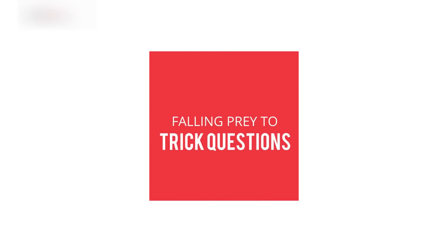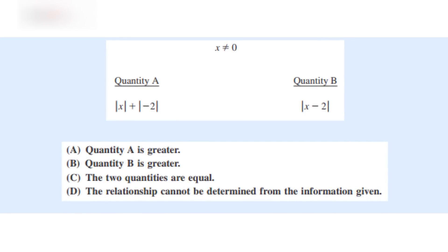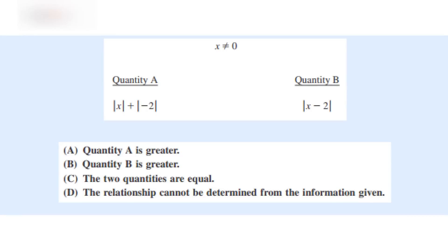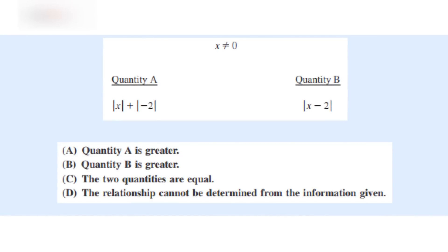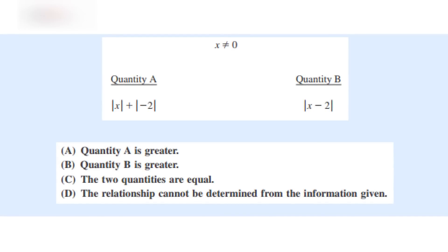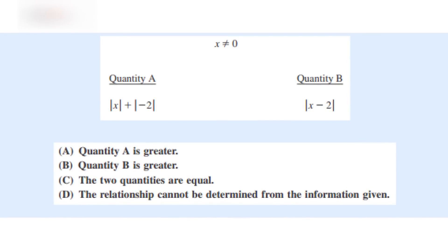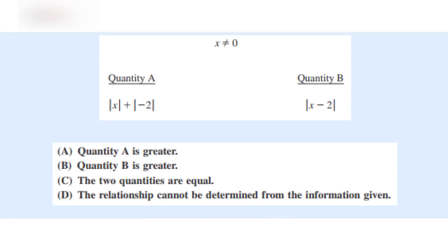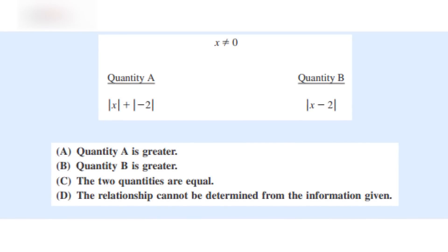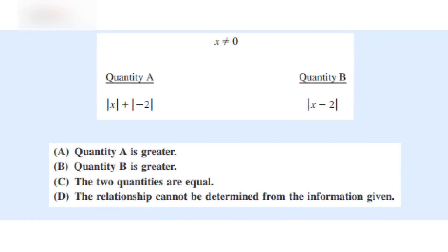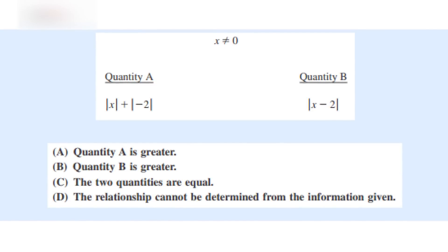Number two: falling prey to trick questions. Let me show you what I mean. Given that x is not equal to zero — quantity A: mod of x plus mod of minus 2; quantity B: mod of x minus 2. The choices are: quantity A is greater, quantity B is greater, the two quantities are equal, or the relationship cannot be determined from the information given. While the question looks fairly simple, if you're not done with the rules of the mod operator, you might be in big trouble.